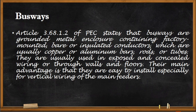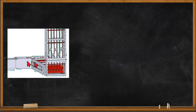The main advantage of busways is that they are easy to install, especially for vertical wiring of the main feeders — for example, in high-rise buildings. A busway is a grounded metal enclosure containing factory-mounted bare or insulated conductors — either copper or aluminum bars, rods, or tubes — and its main advantage is ease of installation for vertical main feeder wiring in high-rise buildings.